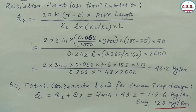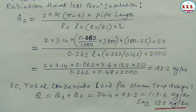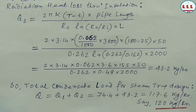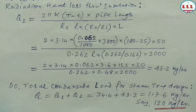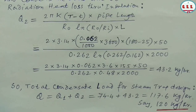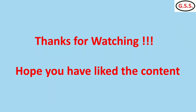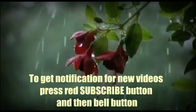The total condensate load rounds to approximately 120 kg/hr. Therefore, we should design the steam trap for a condensate load of 120 kg/hr.